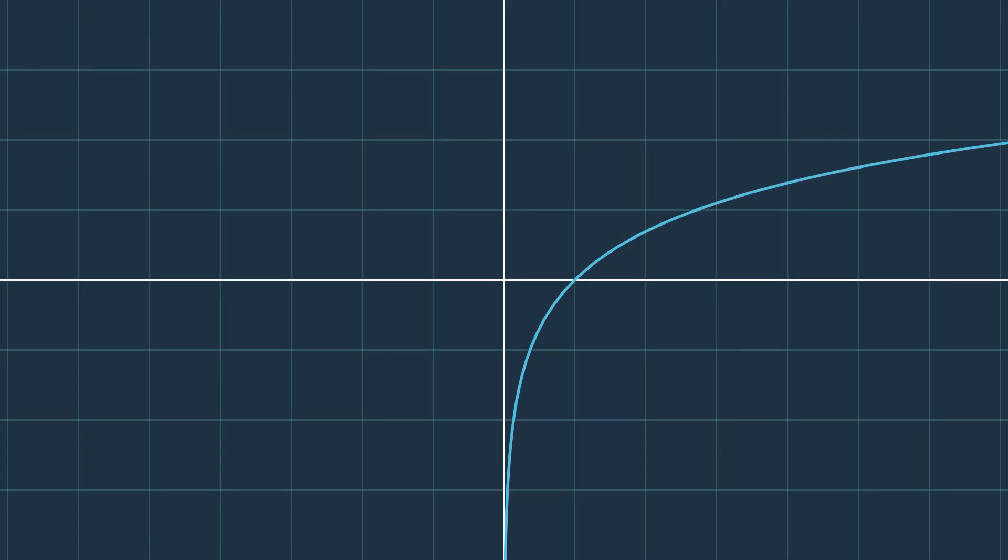I think this property makes logarithms so useful in so many domains, like engineering, statistics, and so many fields. The reason is that dealing with the product is much more complicated usually than dealing with the sum, and logarithms solve this problem in the best way. Nevertheless, when I saw this function for the first time, I felt like there has to be something wrong with it, and I will explain why.